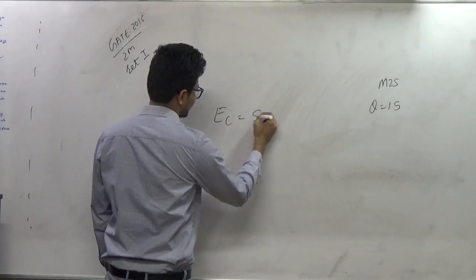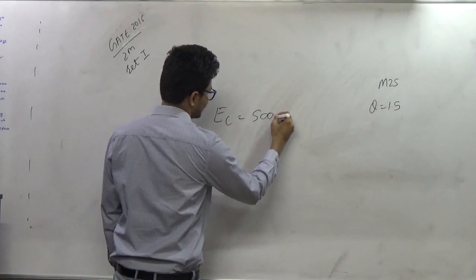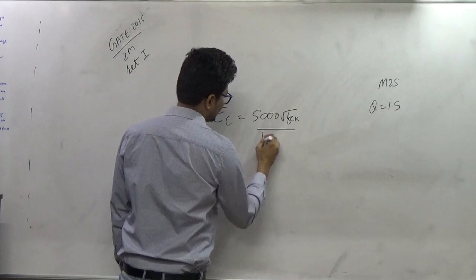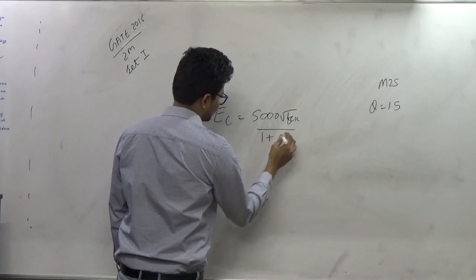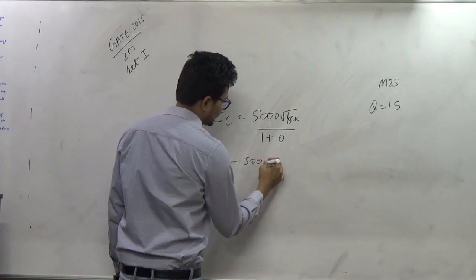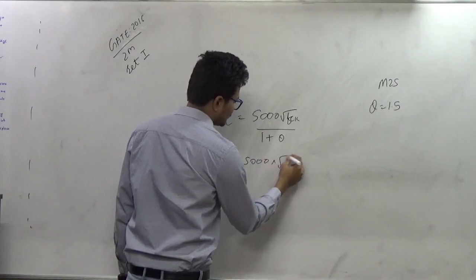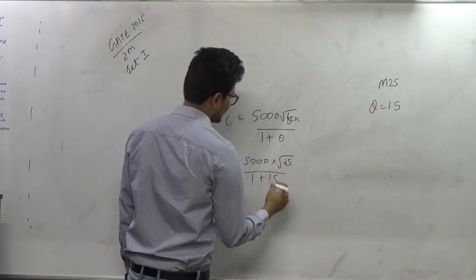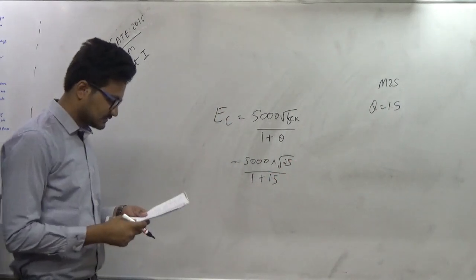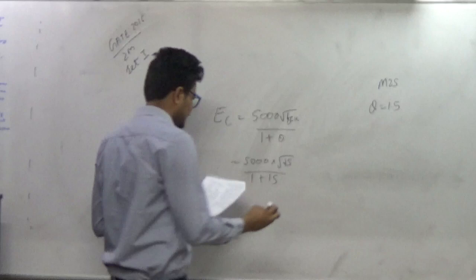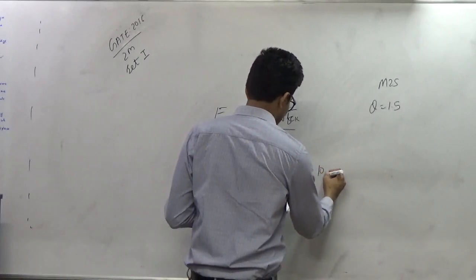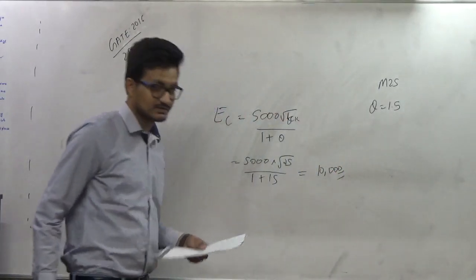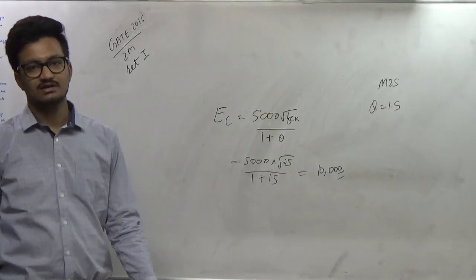The long-term modulus of elasticity is given by the formula: 5000 × √fck / (1 + θ). Substituting: 5000 × √25 / (1 + 1.5). Solving this, we get the long-term modulus of elasticity as 10,000 MPa. Therefore, 10,000 MPa is the correct answer.